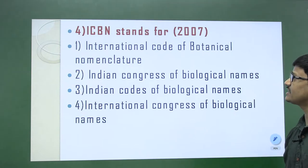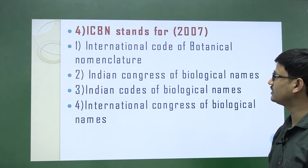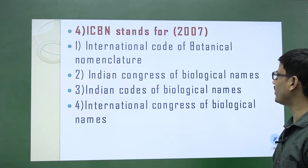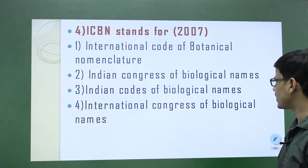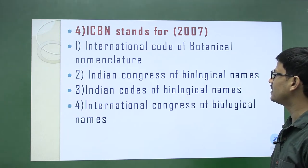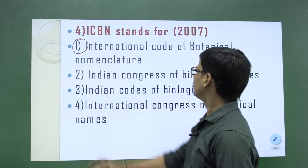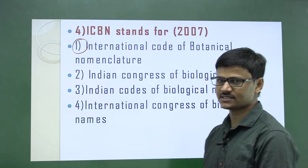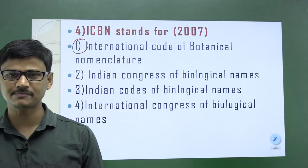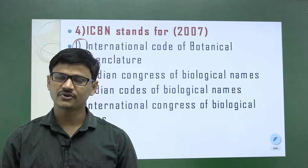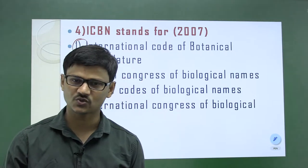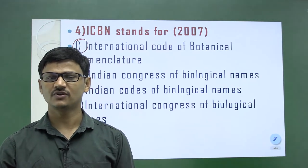Last question: ICBN stands for — asked in 2007. The options were International Code of Botanical Nomenclature, Indian Congress of Biological Names, Indian Codes of Biological Names, or International Congress of Biological Names. The correct answer is International Code of Botanical Nomenclature. ICBN sets rules and principles for naming plants, and the rules of ICBN were first mentioned by Carolus Linnaeus in his publication Philosophica Botanica.